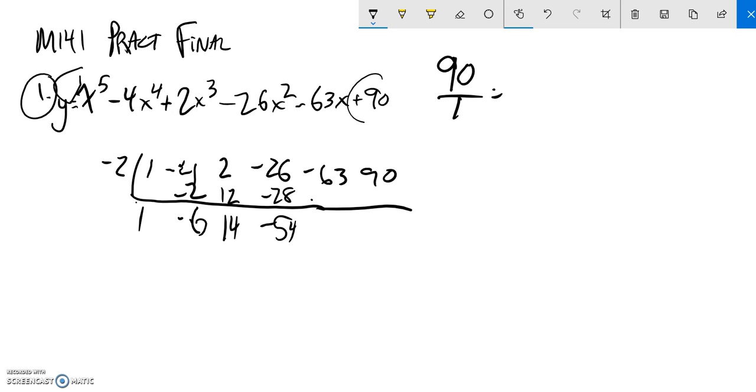Add those together, I get positive 45. Oh, this works out. Multiply that by negative 2, it's negative 90, and zero. So one of my zeros is negative 2.